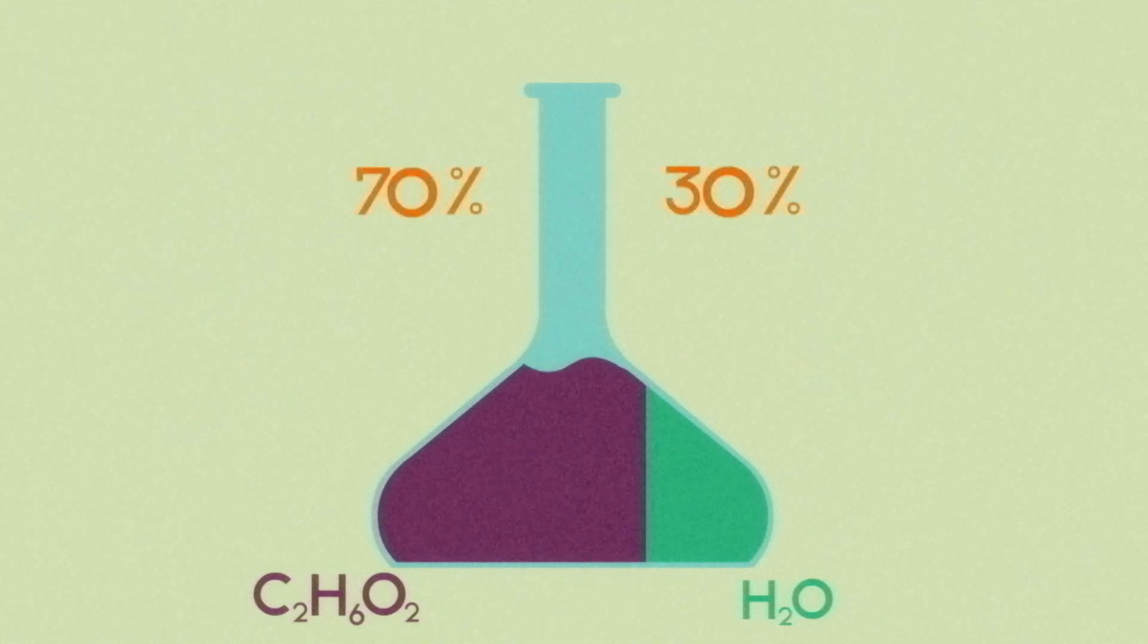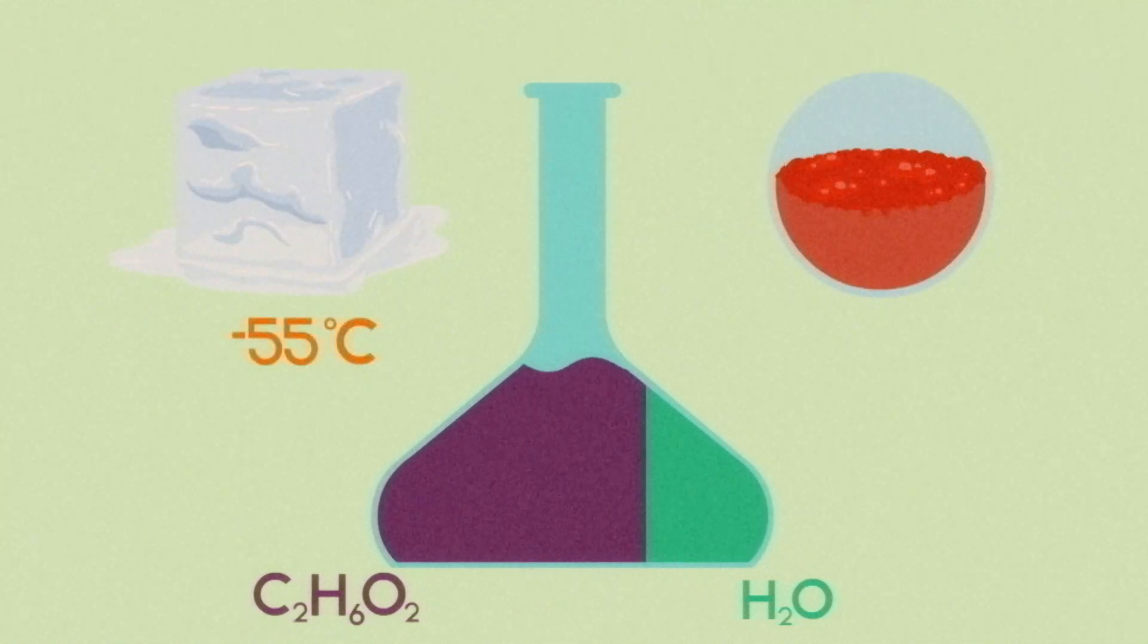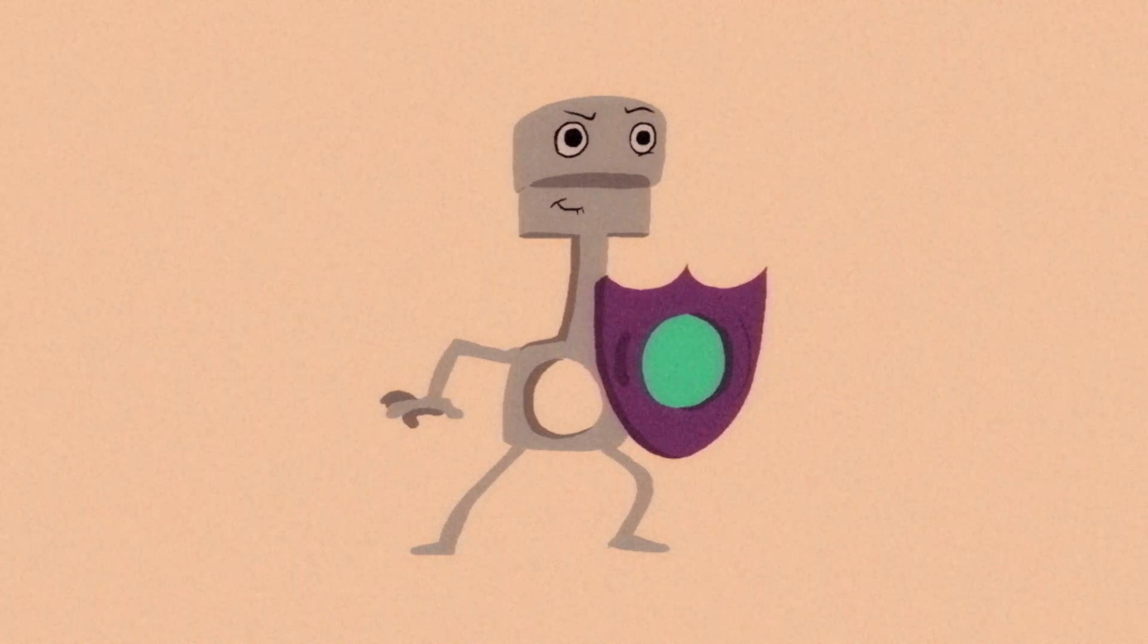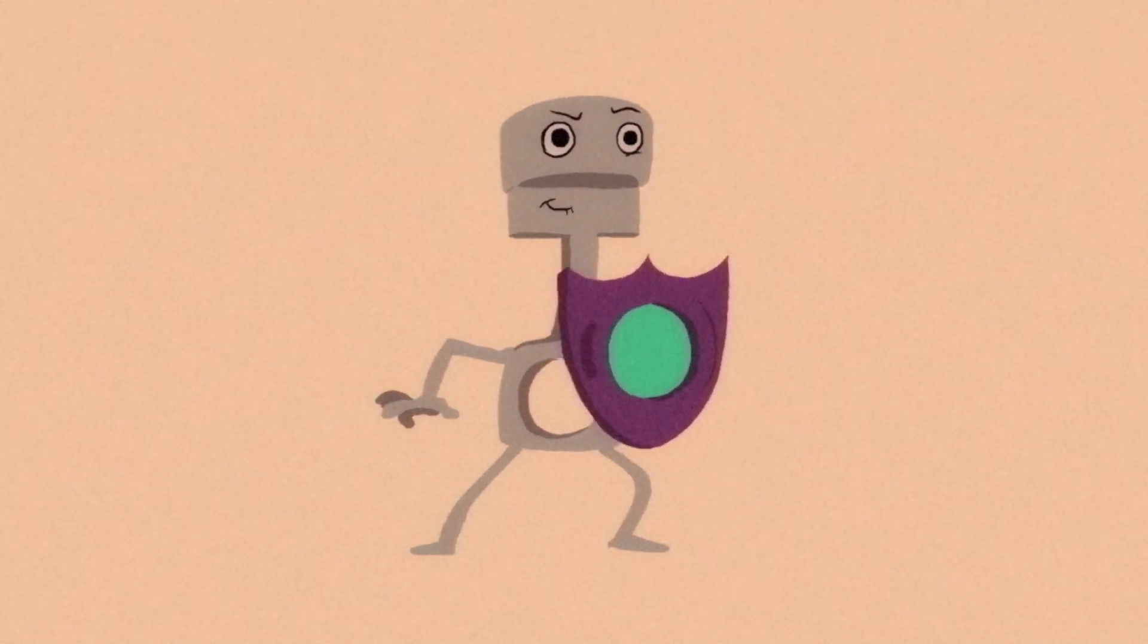At the highest recommended proportion of 70 to 30, the freezing point is even lower, at negative 55 degrees Celsius, and the boiling point rises to 113 degrees Celsius. As you can see, the more ethylene glycol you add, the more protection you get.